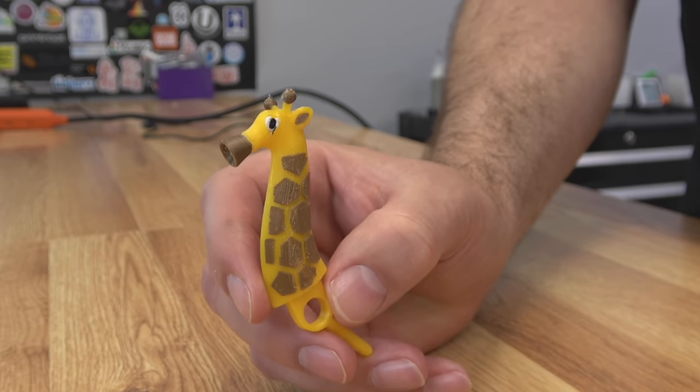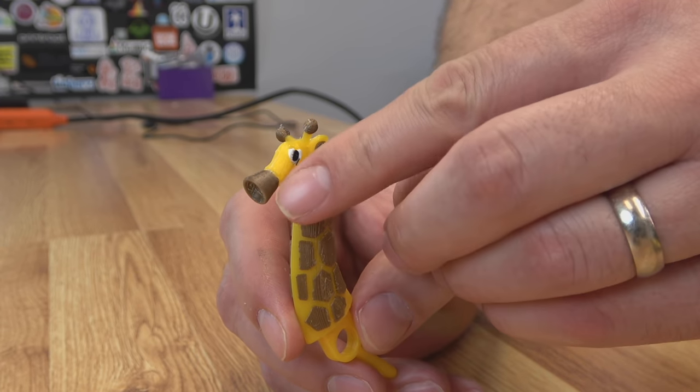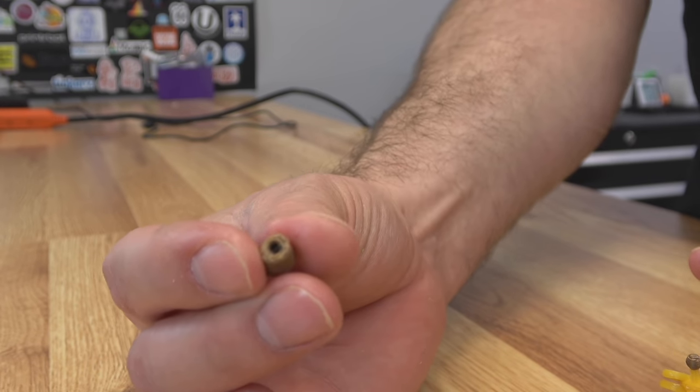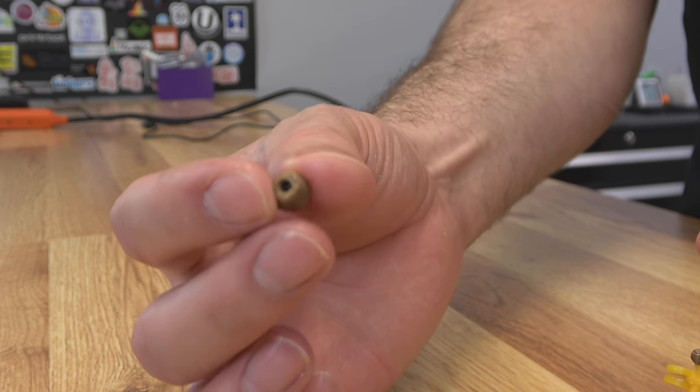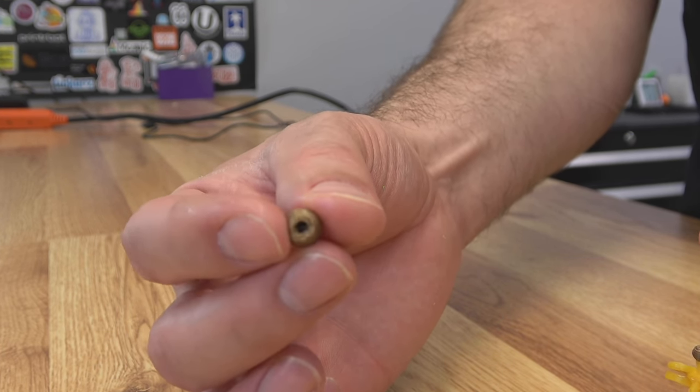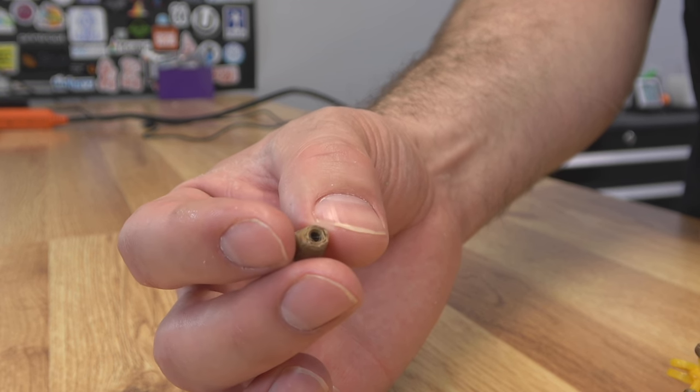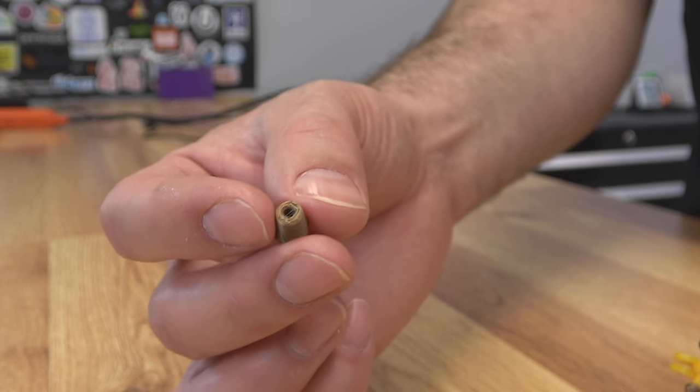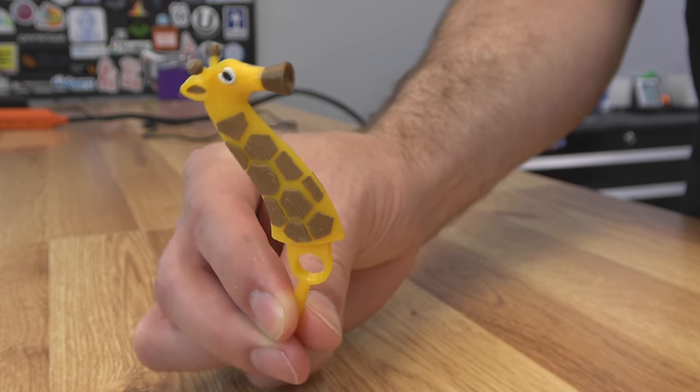One thing to note when you're putting your giraffe together is that inside the mouth, you're going to need some magnets. The mouth just looks like this. Load two of those M3 magnets down in here. I pushed them down with an M3 by 10mm screw. It worked pretty well. But load two up so he's able to catch that ball a lot easier. But he turned out pretty well.